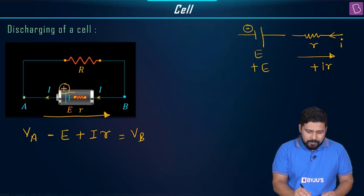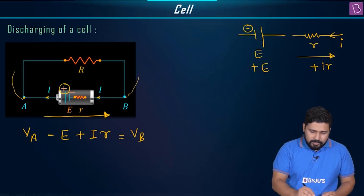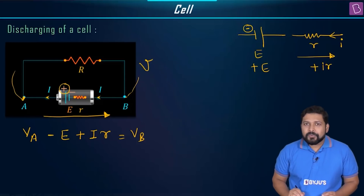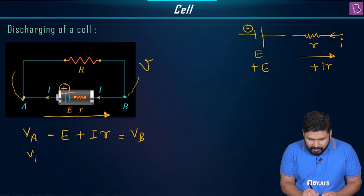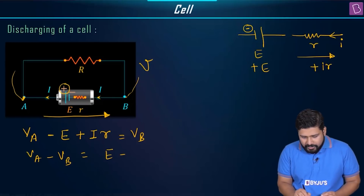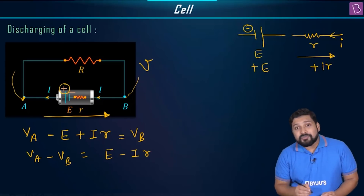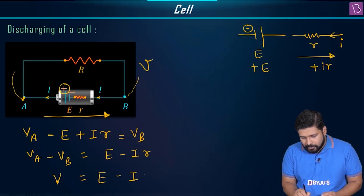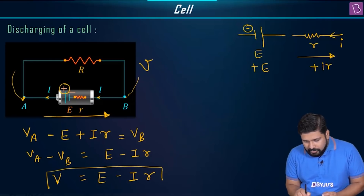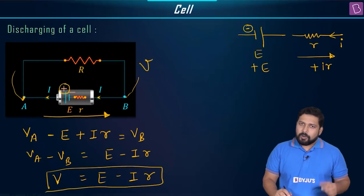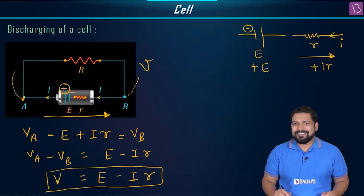V_A − V_B is nothing but the external terminal potential V. So we can write V_A − V_B = E − Ir, which means V = E − Ir. This is exactly the same result we got from our conceptual understanding, and also by Kirchhoff's law.